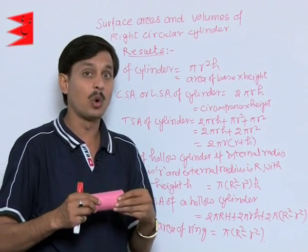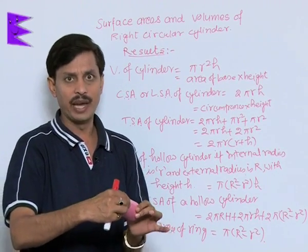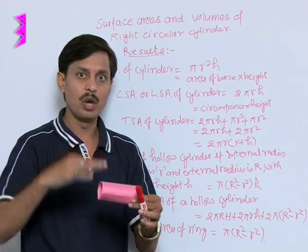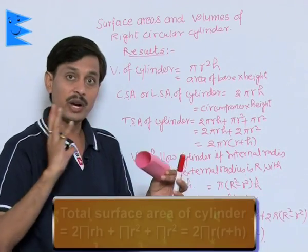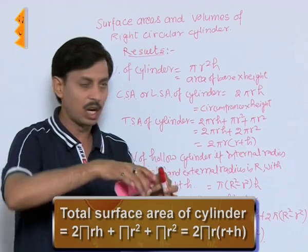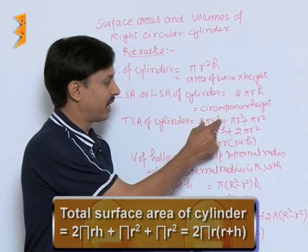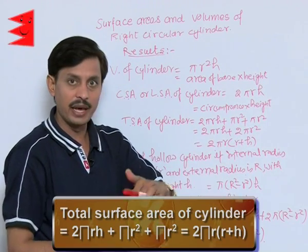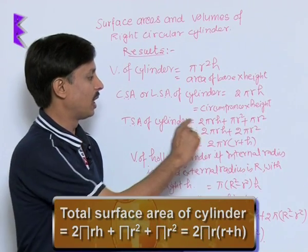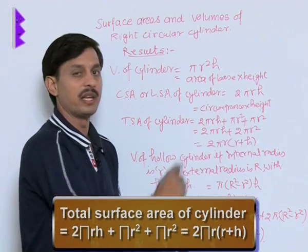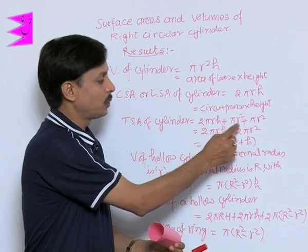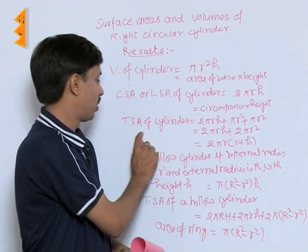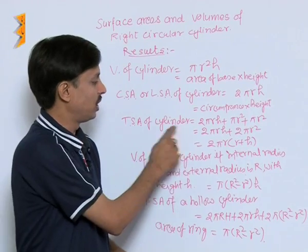If you close the cylinder with a lid and a base, the total surface area equals the curved surface area plus the area of both circular ends: 2πrh + πr² + πr², which simplifies to 2πrh + 2πr², or 2πr(r + h). This is the formula for the total surface area of a cylinder.